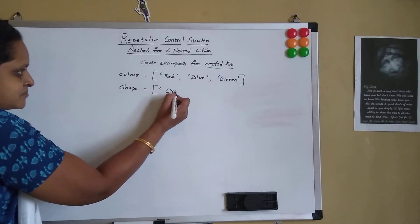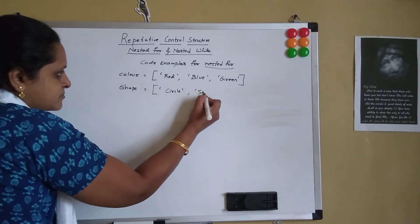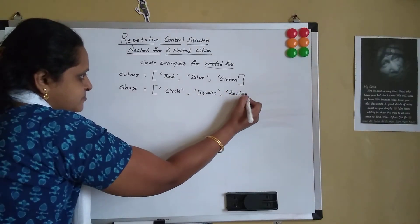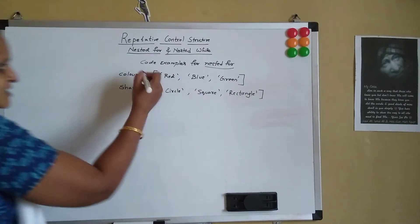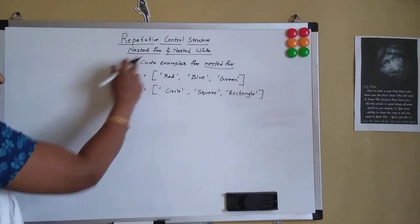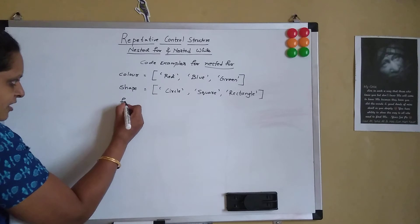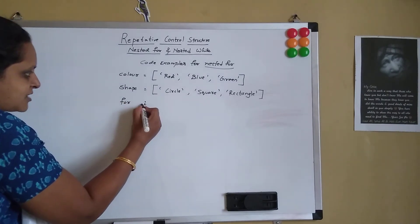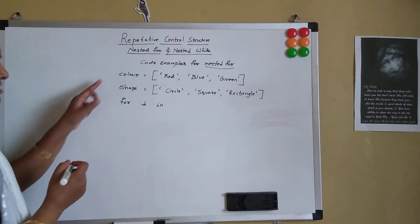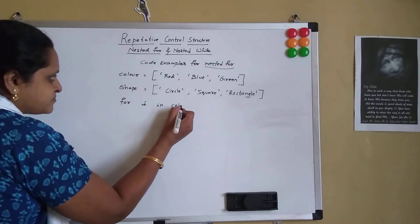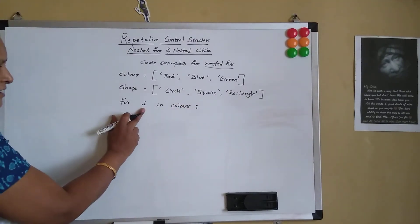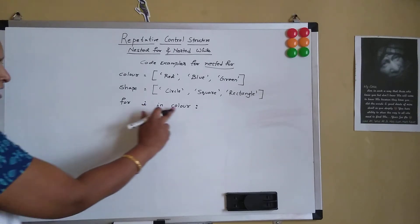The shape list contains: circle, square, rectangle. So basically I am having two lists — one is the color and one is the shape. Now let's work on the nested for loop. So I say for i in color — i is my iterating variable and color is the sequence, which in this case is a list.